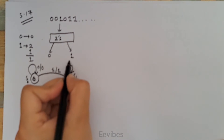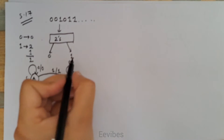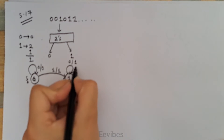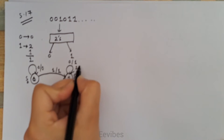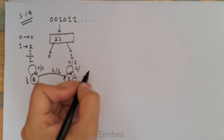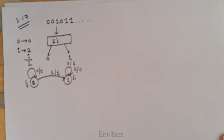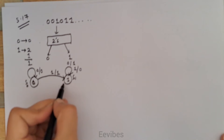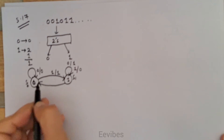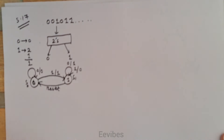When input is equal to zero and we are in state one, output will be equal to one. For better understanding, let's also draw the state diagram. There should always be an asynchronous reset present in this circuitry. With that, the state diagram is completed.